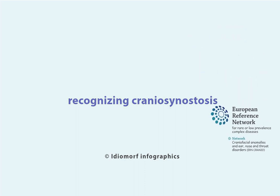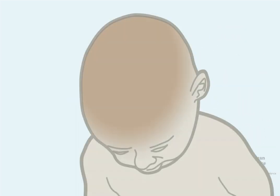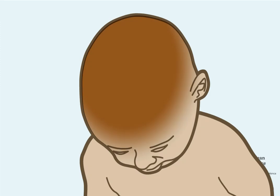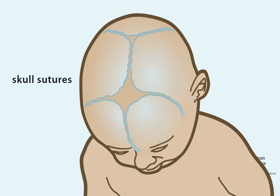Recognizing Craniosynostosis. At birth, the skull is composed of separate bone fragments that are connected with skull sutures. The sutures enable the primary growth of the skull. Craniosynostosis occurs when one or more of the skull sutures are prematurely closed. This causes characteristic changes in the shape of the skull and comes with a risk of developing insufficient volume for the brain.